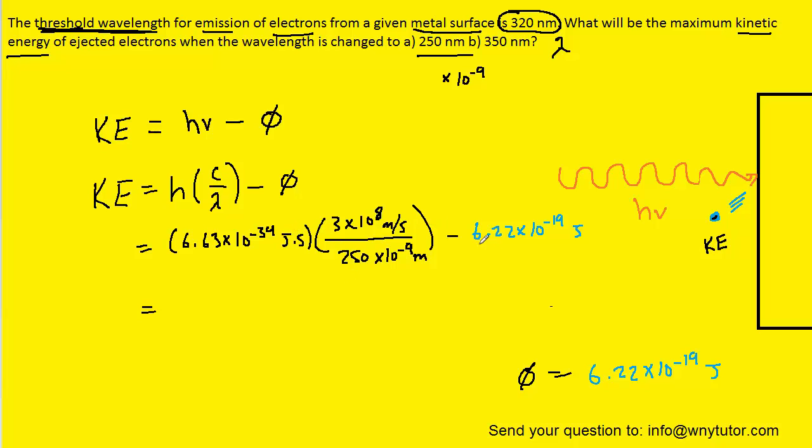We've gone ahead and plugged in the known values. Notice in blue we have that work function. When we type that into our calculators we should get approximately 1.74 times 10 to the minus 19th, and the unit is once again going to be joules. So this will be the correct answer to part A.